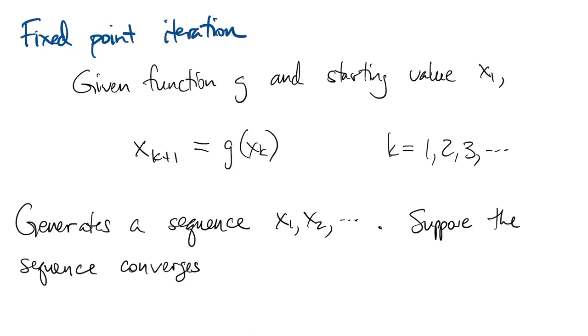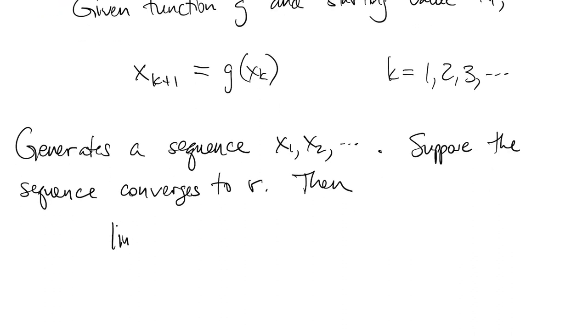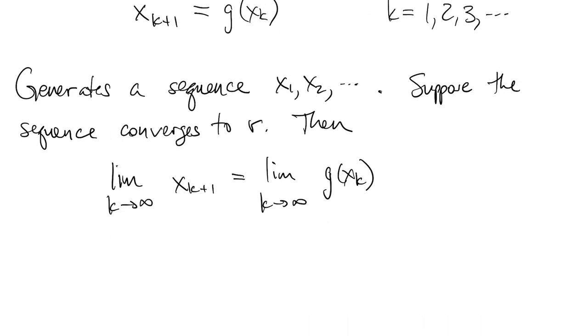If the sequence converges to a value r, then we can take the limit of both sides of the fixed point iteration equation, and we show that r is equal to g of r. So if the limit exists, it must be a fixed point.